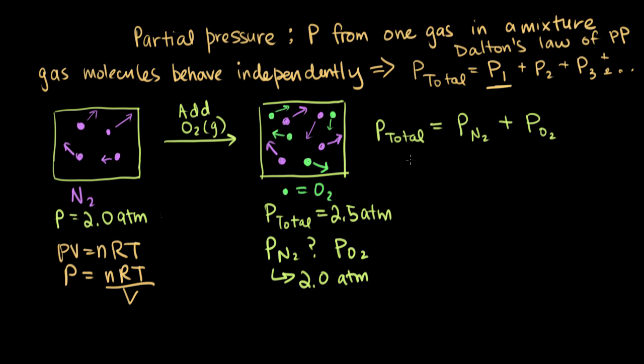So then we know that P total is 2.5 atmospheres. And the partial pressure of nitrogen, as we just mentioned, is 2.0 atmospheres. And then we want to still figure out the partial pressure of oxygen.